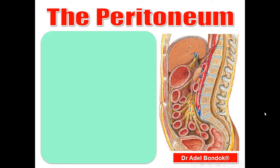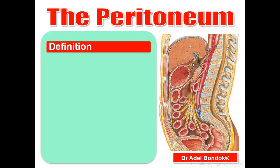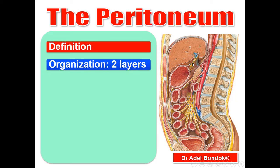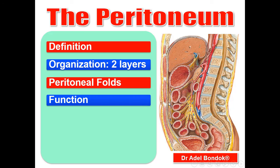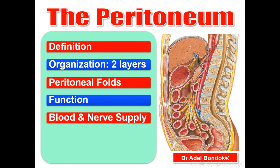Hello everyone, this is Dr. Adel Bondok, Professor of Anatomy and Neuroscience, Mansoura University, Egypt. I will talk about the peritoneum — what is the peritoneum, what is the organization of the peritoneum, organized into two layers: a parietal layer and a visceral layer. We will talk about the peritoneal folds like lesser omentum and greater omentum, functions, blood supply, and nerve supply.